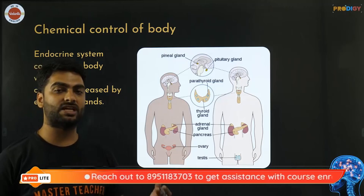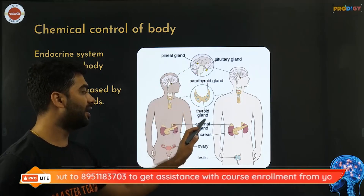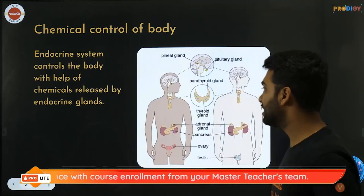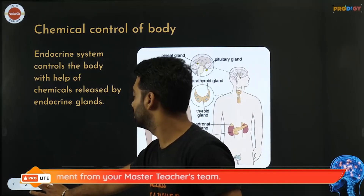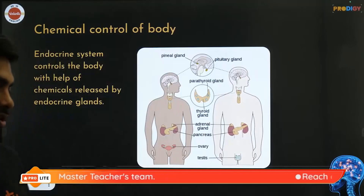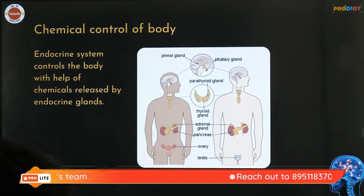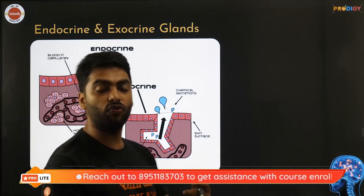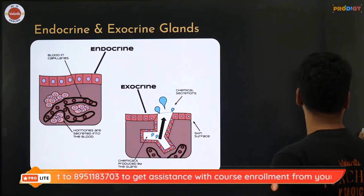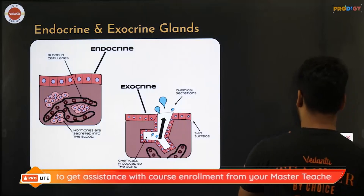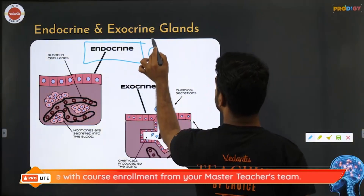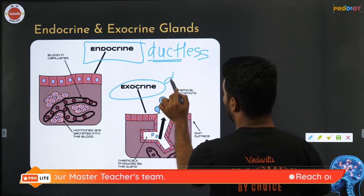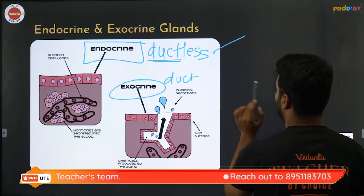In today's session we'll explore the pituitary, thyroid, adrenal, ovaries and testes. Endocrine glands are ductless glands — without a tube — whereas exocrine glands have a duct. Examples of endocrine glands include the pituitary and thyroid. Exocrine glands include ear glands, salivary glands, sweat glands, and oil glands (sebaceous glands).